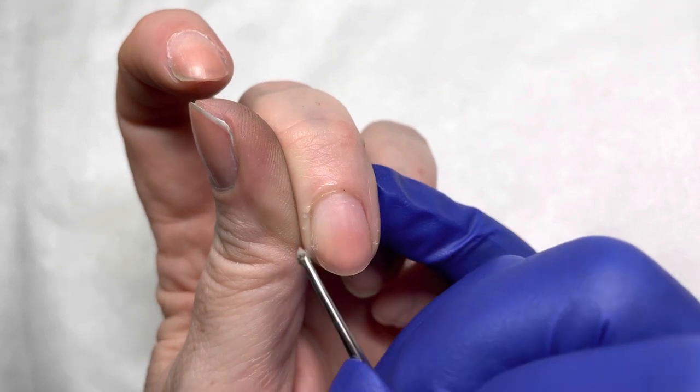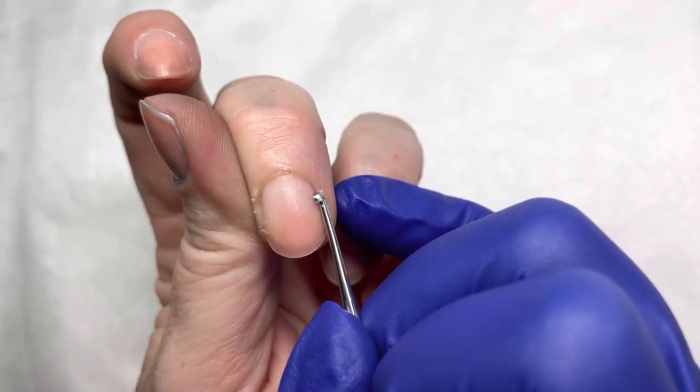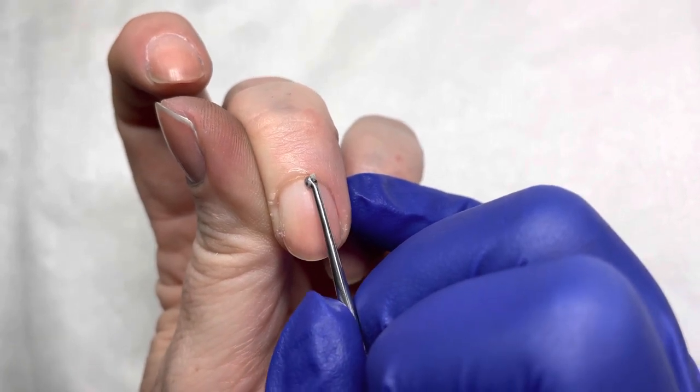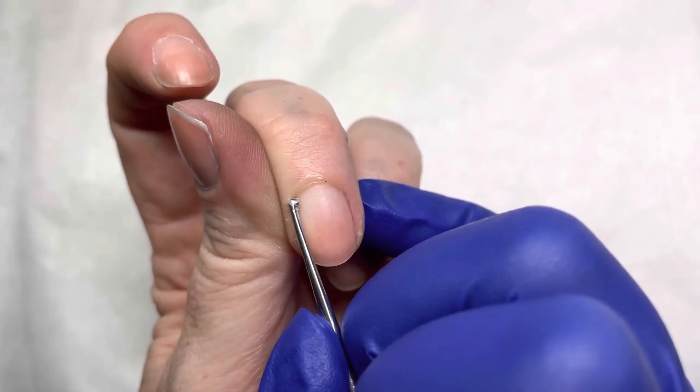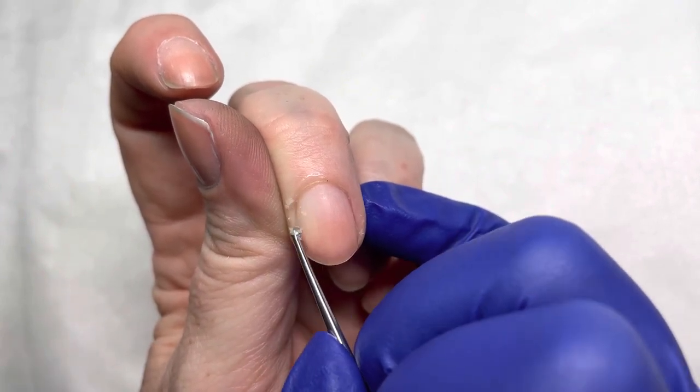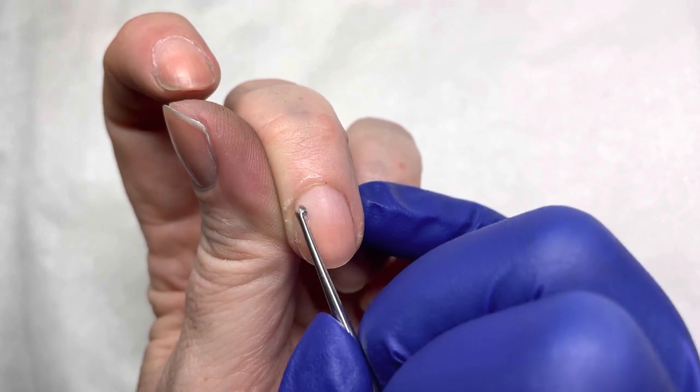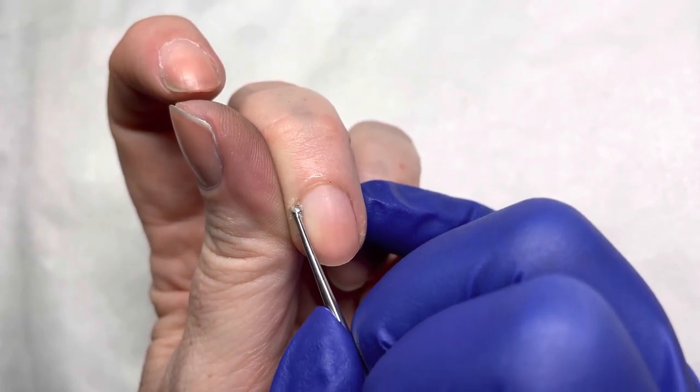Make sure you have the cup face of that curette flat to the nail so that you're not scratching the nail. If you're getting scratches in the nail from your curette, you're not using your curette flat to the nail. Make sure it's flat to the nail and that you feel it catching on the cuticle, not scratching.